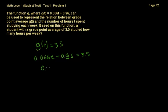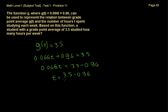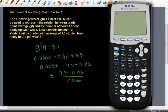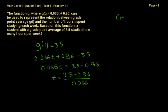To solve for t, subtract 0.96 from both sides: 0.066t equals 3.5 minus 0.96. Then divide both sides by 0.066, giving t equals (3.5 minus 0.96) divided by 0.066. Using the calculator: 3.5 minus 0.96 divided by 0.066 equals approximately 38.48. The correct answer is D, which is 38.5 — the closest option to what we found.